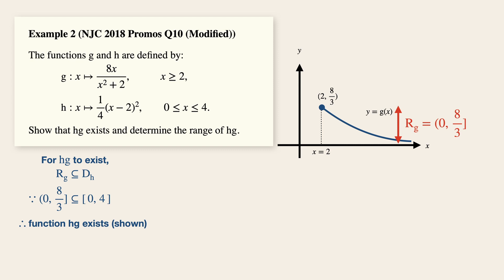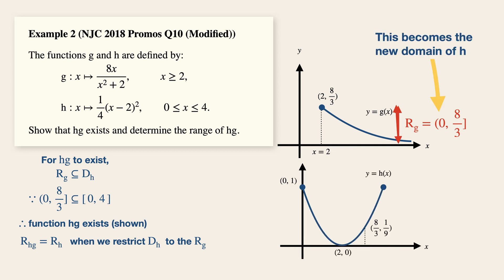Next, to find the range of HG, it's simply the range of H. But remember, we need to restrict the domain of H to the range of G. Now let's make it a habit to do a quick sketch of the function H. Similar to the previous example, the range of G is now the domain of H. From this domain, read off or find the corresponding range of H.